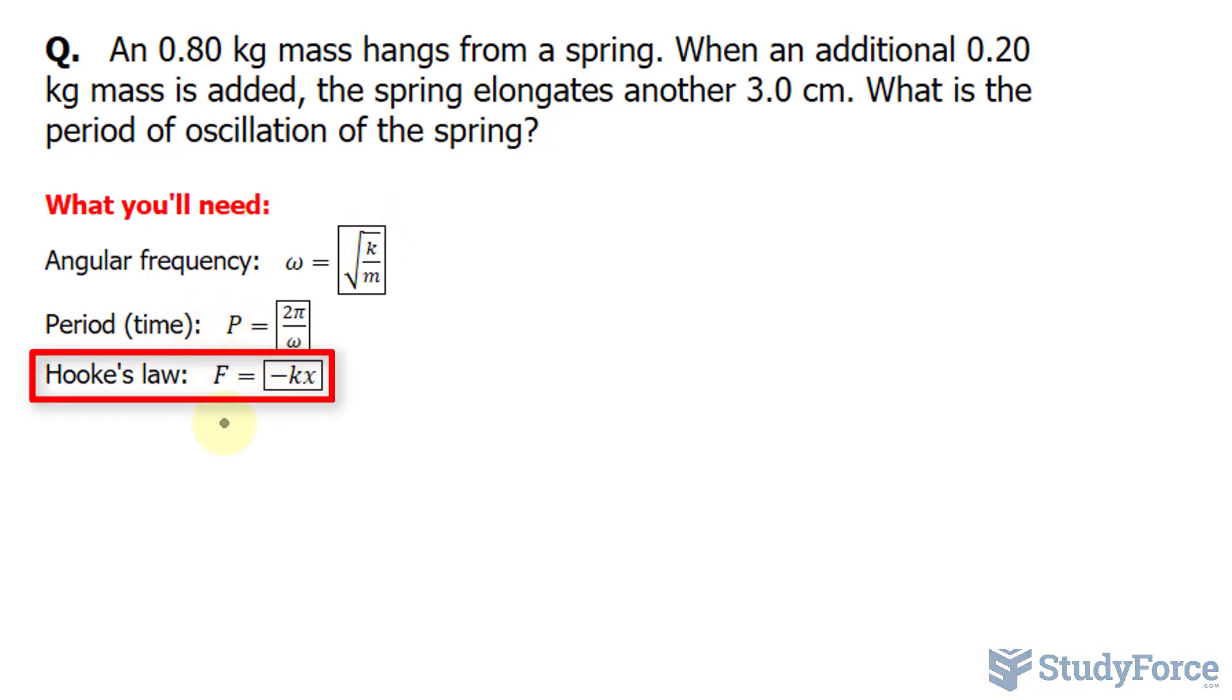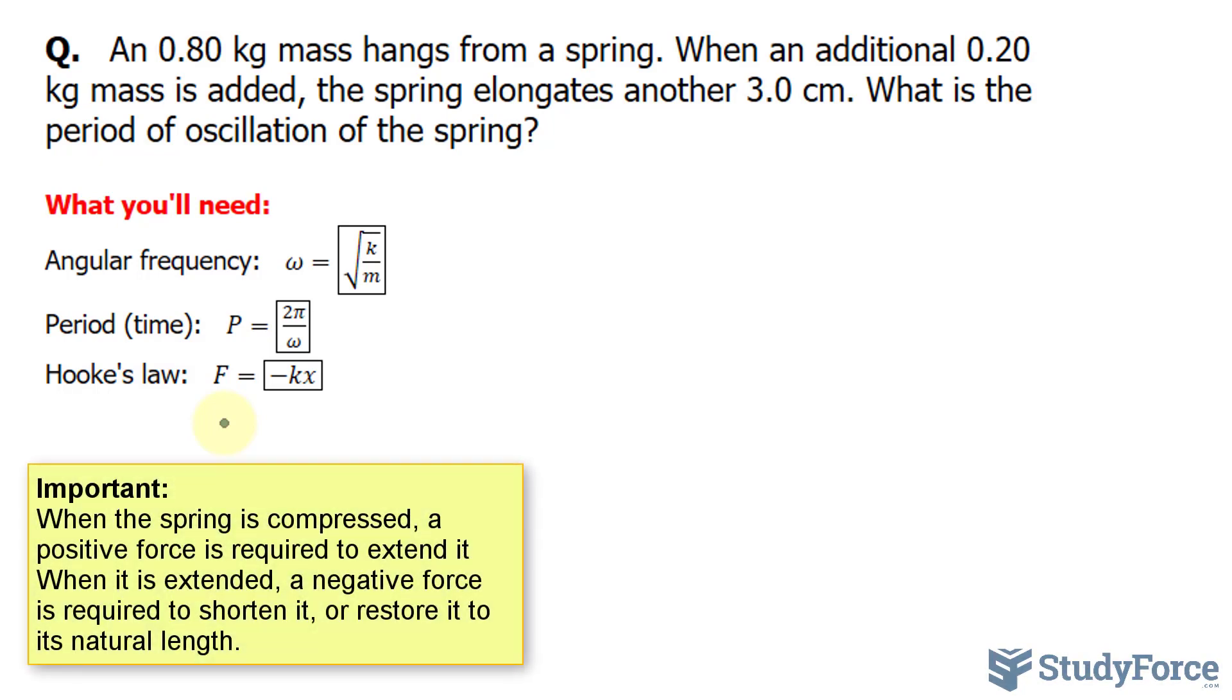Taking a look at Hooke's law, the minus sign in f is equal to negative kx is there by convention. We think of f in this formula as the restoring force. When the spring is compressed, a positive force is required to extend it. And when it is extended, a negative force is required to shorten it, or to restore it to its natural length.